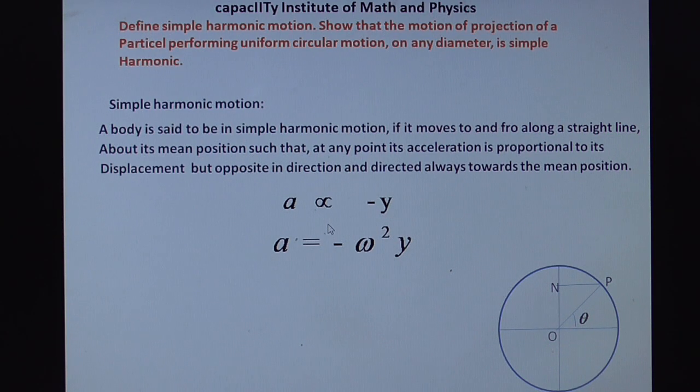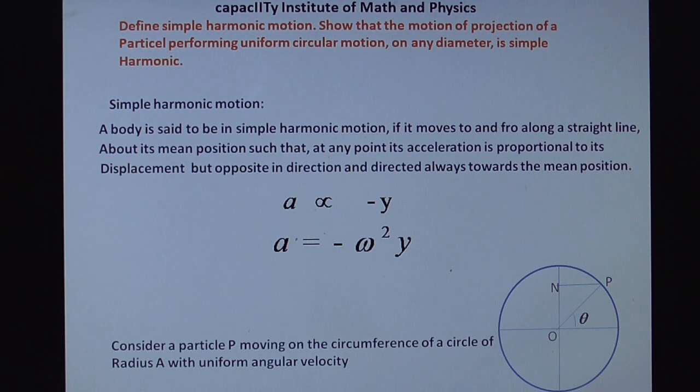Now observe. So observe this diagram. So write or describe something about this diagram. Procedure start. Consider a particle P moving on the circumference of a circle. Let this is the particle P on circumference of a circle. So P moving on the circle, that is circumference of a circle of radius A.